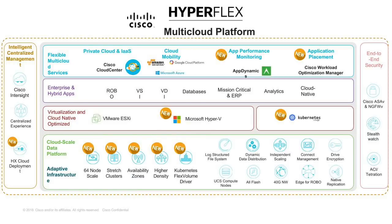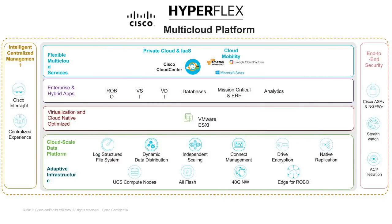At the platform layer in 3.0, we're expanding to 64-node scale using availability zones that increase resiliency as we scale. We're adding stretch clustering, higher density with new drives and form factors, and the flex volume driver for Kubernetes-based applications. Moving up the stack, we now have Hyper-V support giving customers the choice between VMware and Hyper-V.